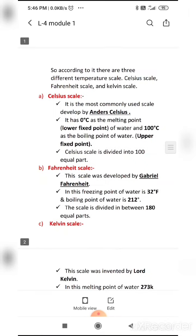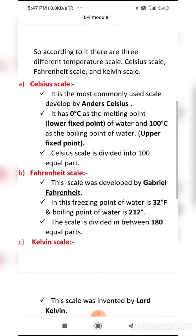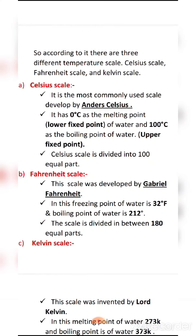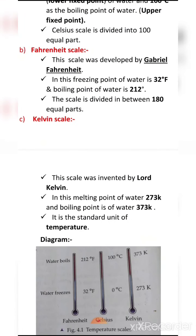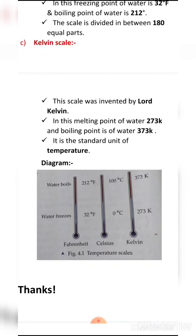Let me revise all three scales again. First, the Celsius scale — given by Anderes Celsius; melting point of water is 0 degree, boiling point is 100 degree, and number of divisions is 100. In the Fahrenheit scale — developed by Gabriel Fahrenheit; melting point is 32 degree, boiling point is 212 degree, and divisions are 180. In the Kelvin scale — invented by Lord Kelvin; melting point is 273 Kelvin, boiling point is 373 Kelvin, and it is the standard unit of temperature.